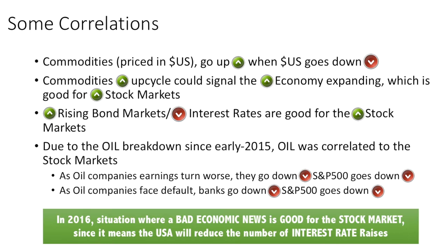A commodities up-cycle can signal the economy expanding, which is good for the stock markets. When stock markets go up, you would buy the USD/JPY pair, or even cross the commodity currencies with the Japanese yen — such as the Kiwi/Yen or the Aussie/Yen.